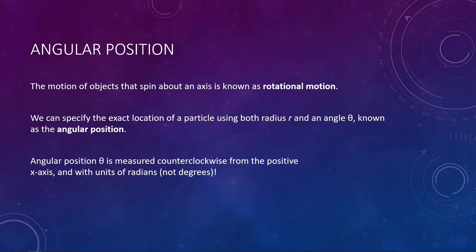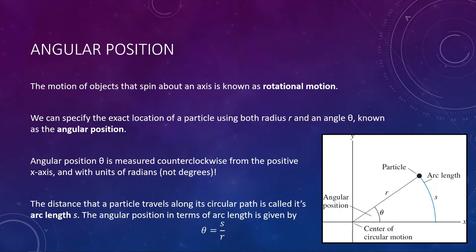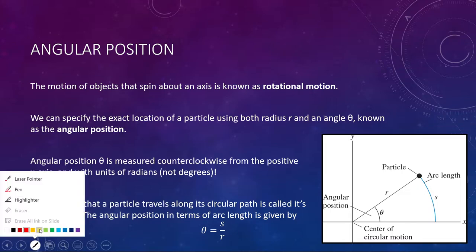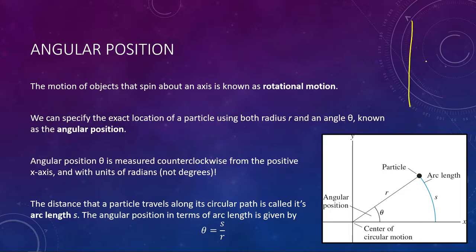Similarly, when we discuss rotational motion, if you want to specify an angular position, you need to know both the radius r and the angle theta that we call the angular position — that is the angle through which the particle moves. Angular position is measured counterclockwise from the zero degree mark or the x-axis. So when we look at this as a picture, we see something like the following.